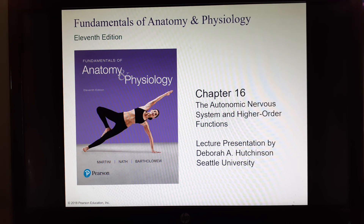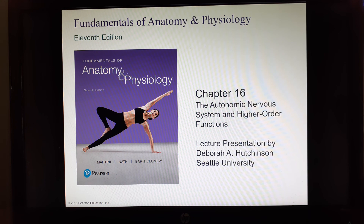All right, everybody, so this is chapter 16, and it's going to be an abbreviated version of the chapter. I've left out the things from the PowerPoint that I'm not going to be testing you on. It's got two major areas: the autonomic nervous system is the first, and then higher order brain functions is the second. I'm probably going to split this into two videos, and this one will just cover the autonomic nervous system.